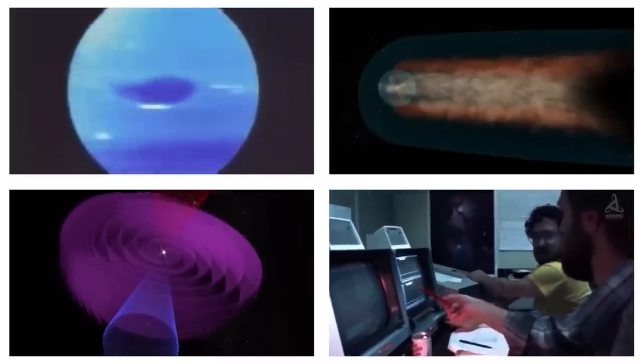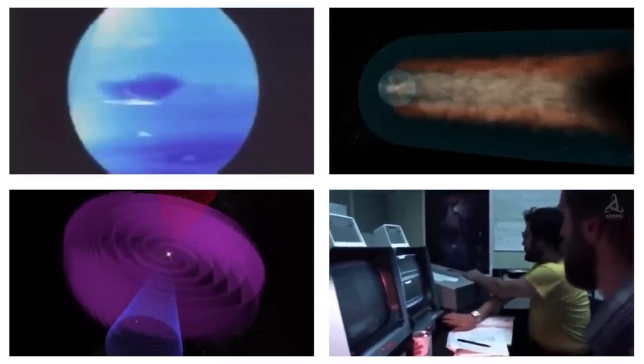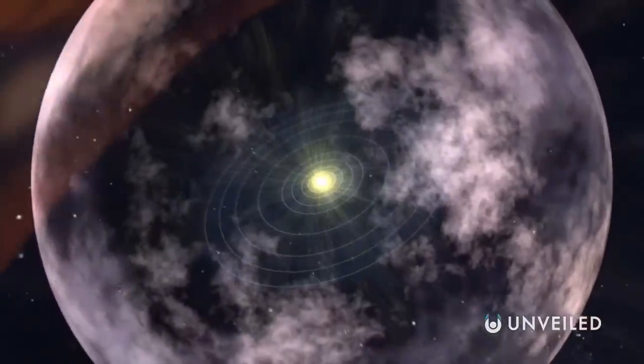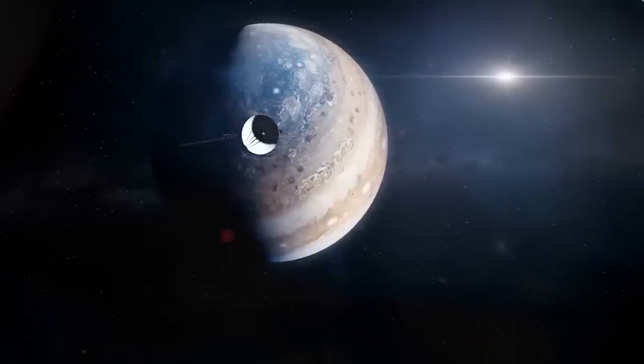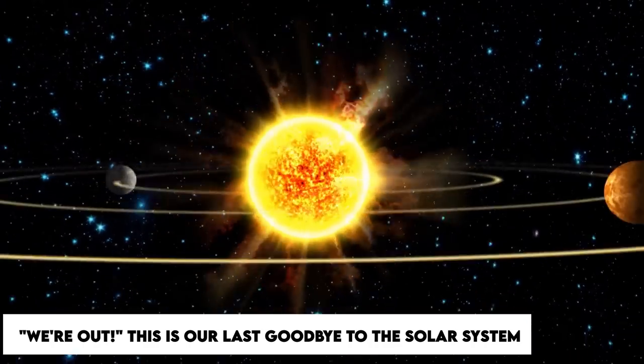Since late July, cosmic rays have increased in intensity while solar wind particles have weakened by a factor of a thousand. Simply looking at particle data would have led us to the conclusion that we're out. This is our last goodbye to the solar system.